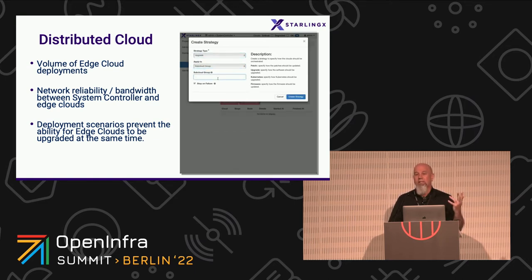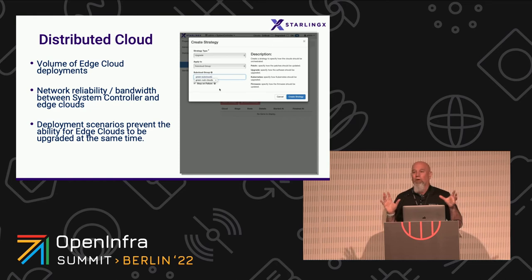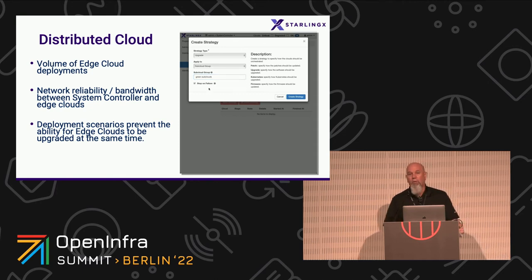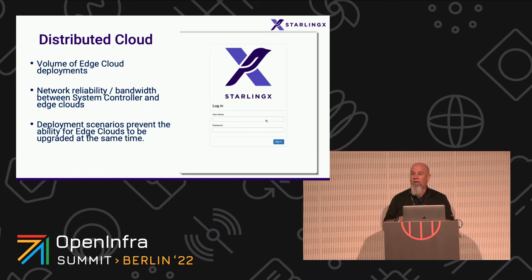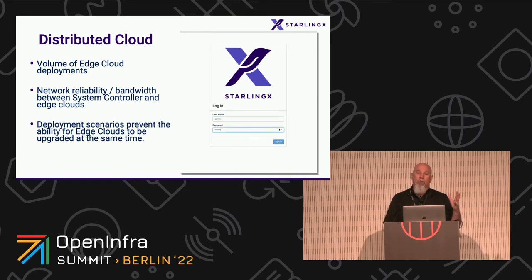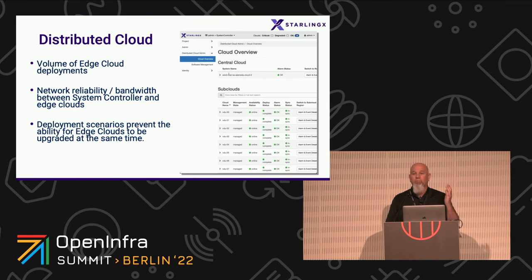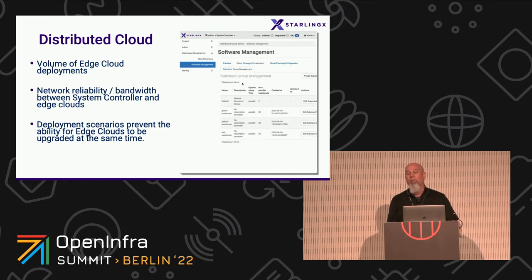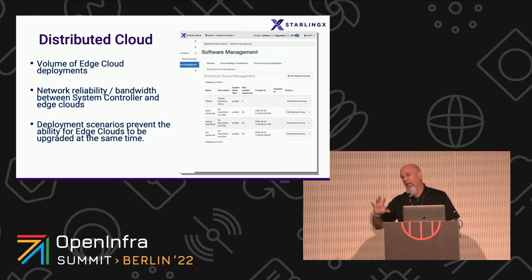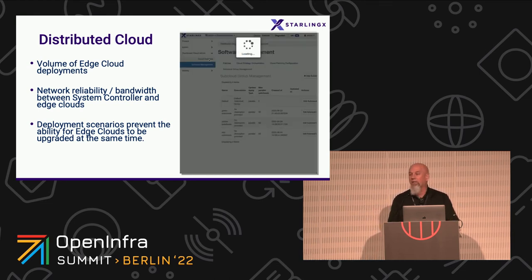Another challenge: edge clouds sometimes overlap for redundancy, and you need at least a few in a region still running. You can't just hit upgrade-all and simultaneously start upgrading them, or you'd bring down service at a larger scale. With StarlingX's grouping capability, you create multiple levels of groups that perform upgrades in controlled batches to prevent that kind of outage.